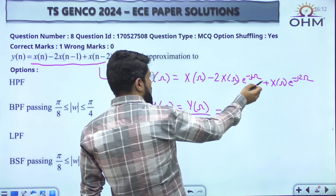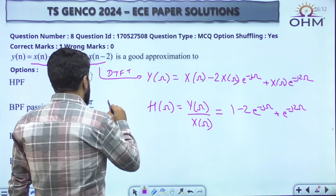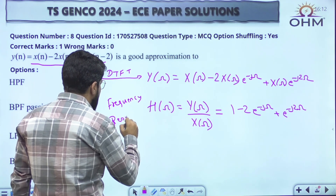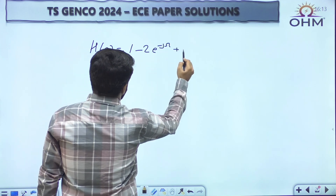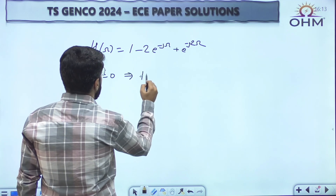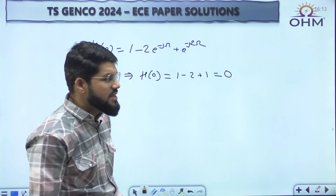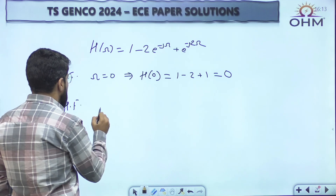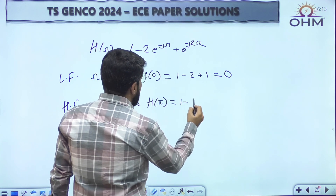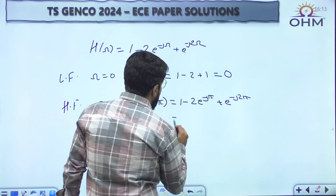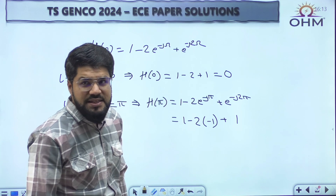Taking X(omega) common on the right side and dividing, the frequency response H(omega) equals 1 minus 2e^(-jω) plus e^(-j2ω). Now, to decide the filter type, we check the gain at key frequencies. At omega equal to zero, all e^0 terms equal 1, so the gain is 1 minus 2 plus 1 equals zero. Since the gain at zero frequency is zero, it is definitely not a low-pass filter.